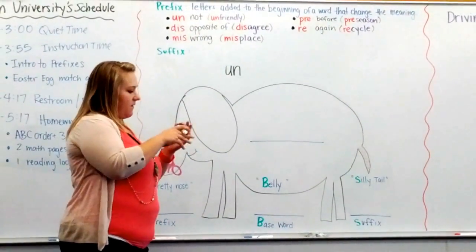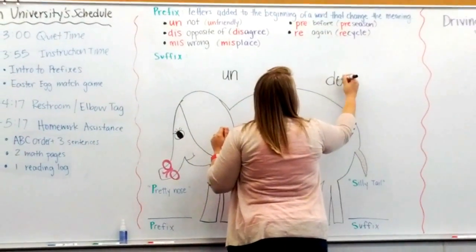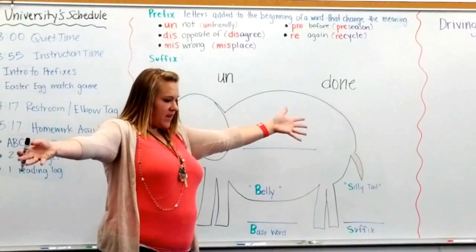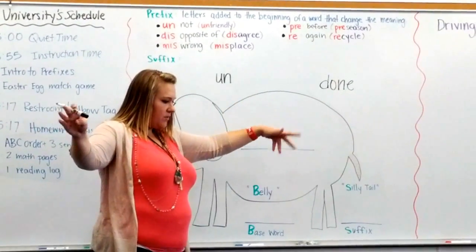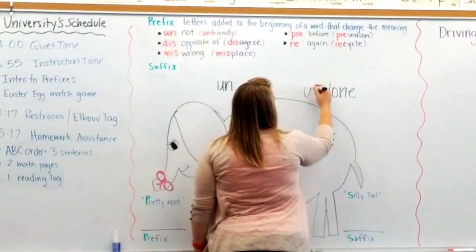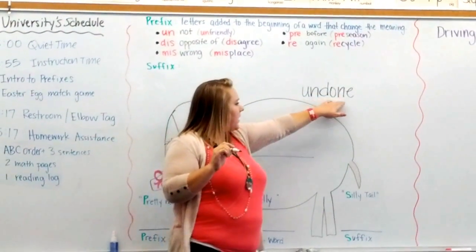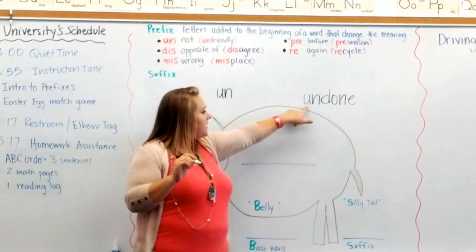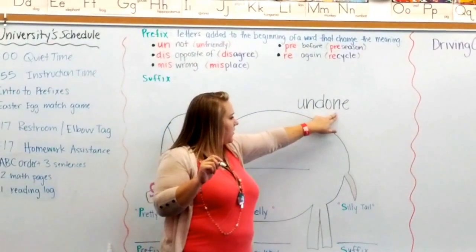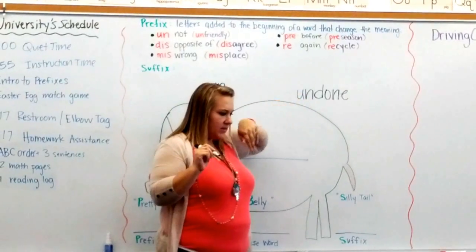So I have the word "done." When something's done, it's finished, right? You don't have anything more to do. What if I put these two letters in front of it? Now it's the word "undone." And "un" means "not," so this word now means "not done." Tell your partner what this word means — not done, undone.